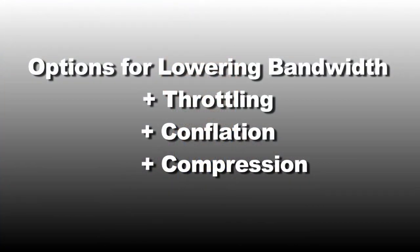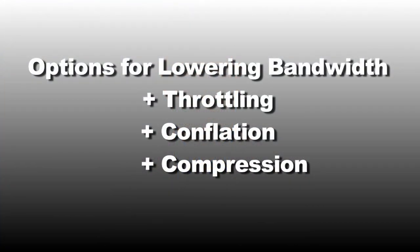For firms that are looking to lower bandwidth, there are typically other options, including throttling, conflation, or compression. Throttling and conflation are similar in that they only send a certain amount of data at a time. Throttling holds back data such that only a certain amount is sent, whereas conflation actually drops messages. While these aren't the best answers for all systems, they may be viable for some firms.